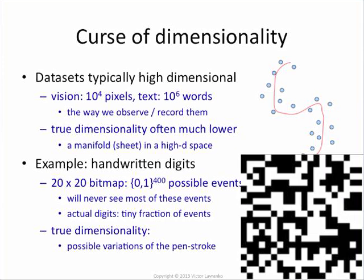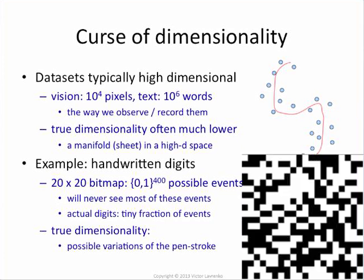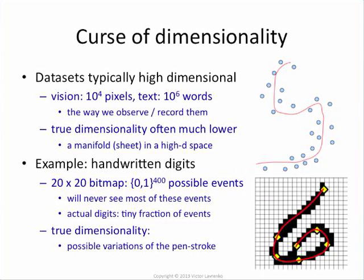Using the original pixel representation, you are wasting your machine learning algorithms on events that don't look anything like what you want to model. The true dimensionality of digits is not 2 to the 400. The true dimensionality has something to do with pen strokes — how much variation do I have in my hand when writing a particular digit on paper. It's not about how many pixels I can set to 0 and 1; it's really the pen strokes, and the dimensionality of that is much, much lower.